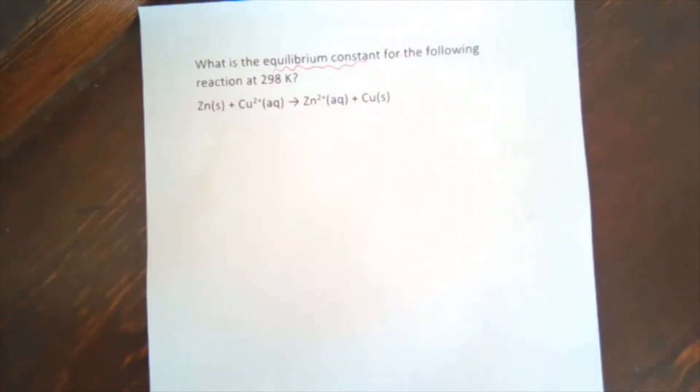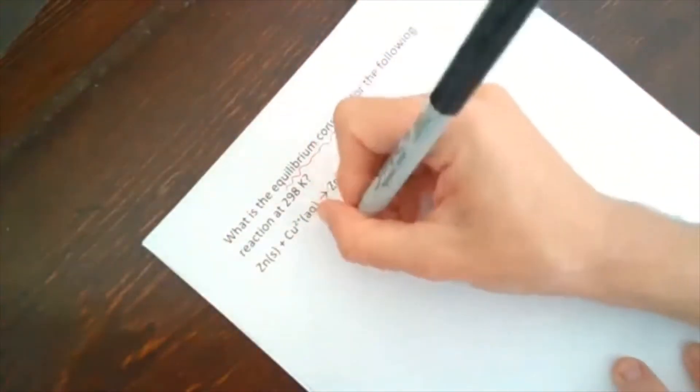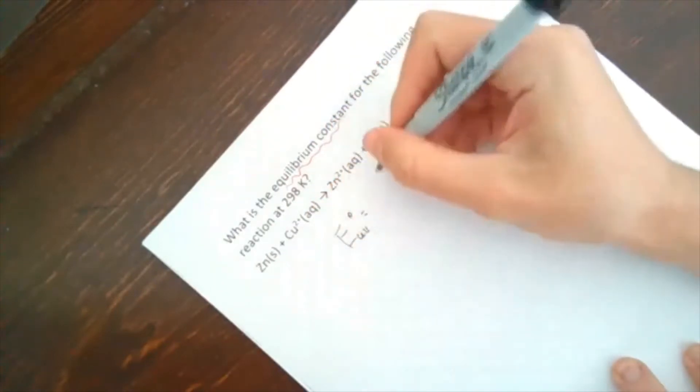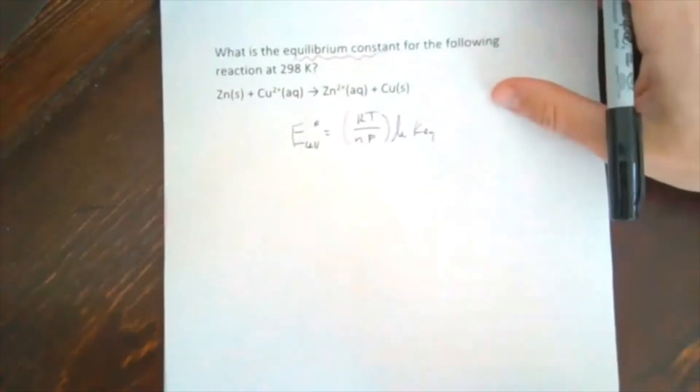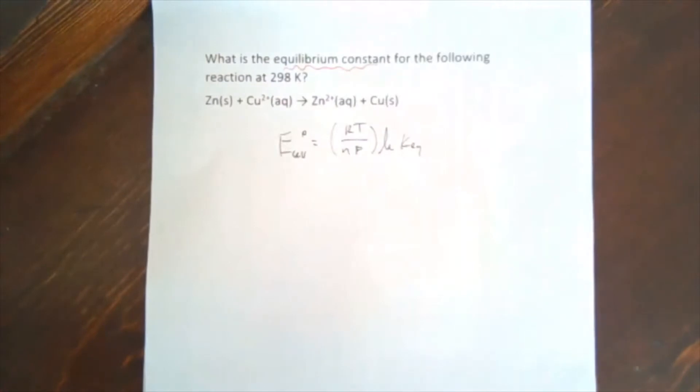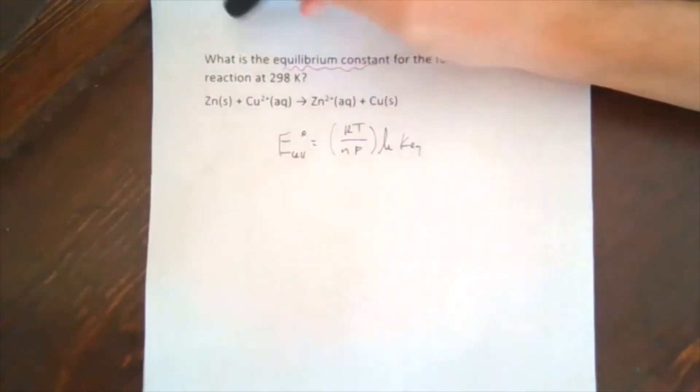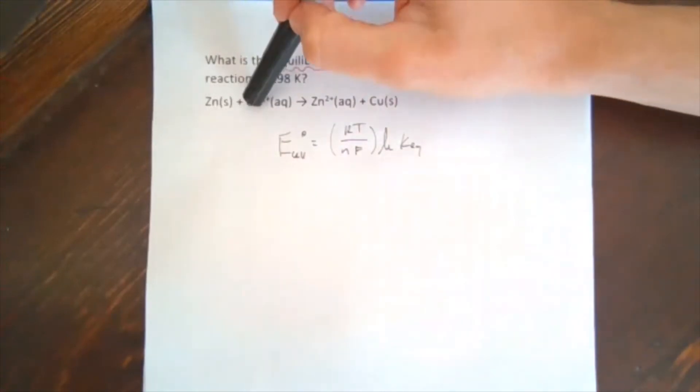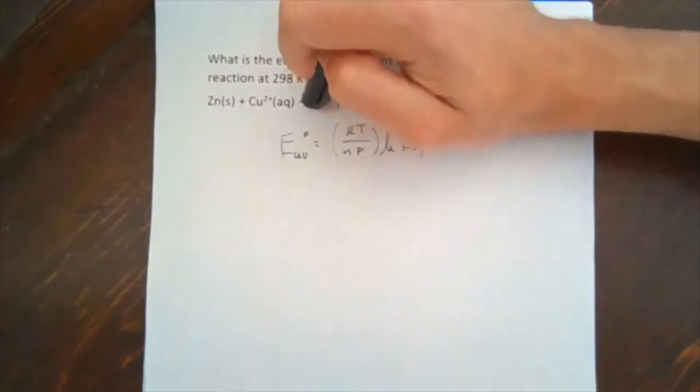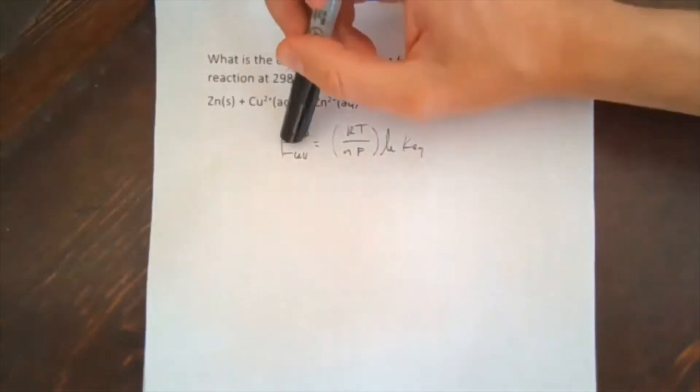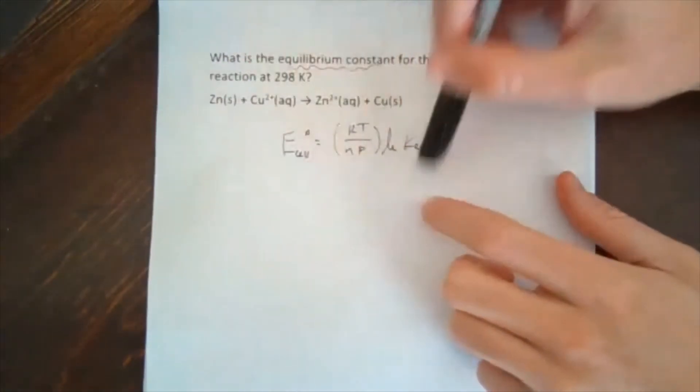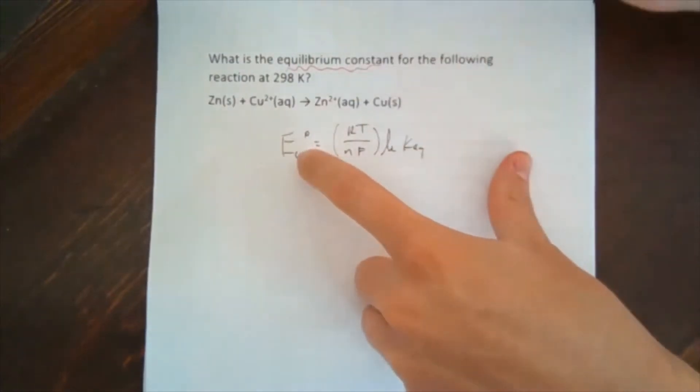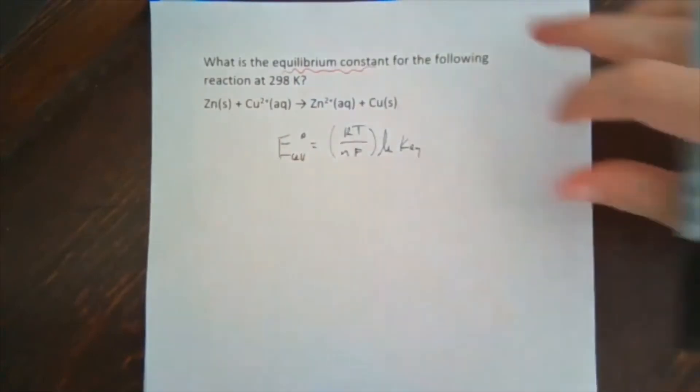We can see that we have an element becoming an ion. That means we have to be moving around electrons, ion becoming element. So that implies that there is definitely a flow of electrons, some electrons moving around here. And so what we want to do is use the equation that E_cell° is equal to RT over nF ln of K_eq. And so even though this reaction may not be happening in a cell, we could do this reaction in just like a beaker or anything we wanted.